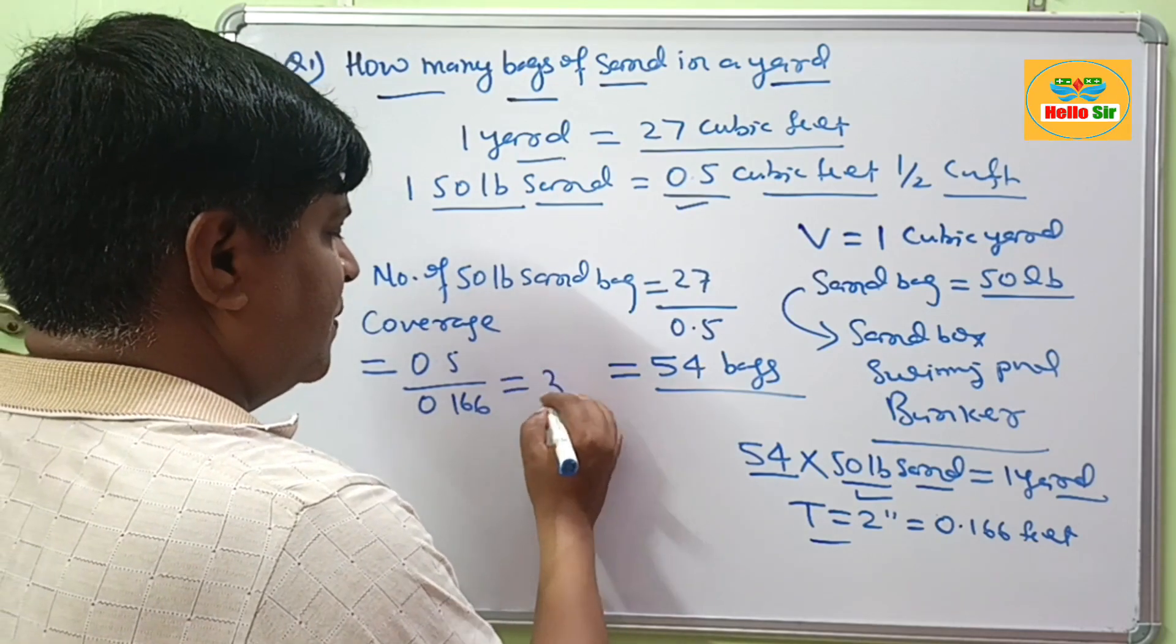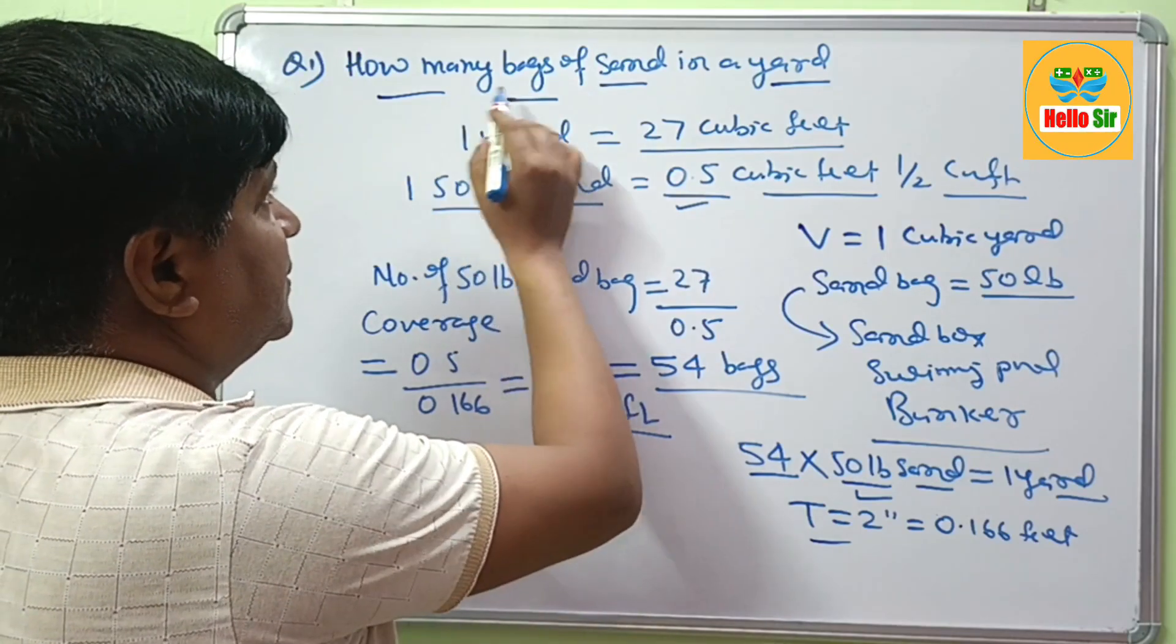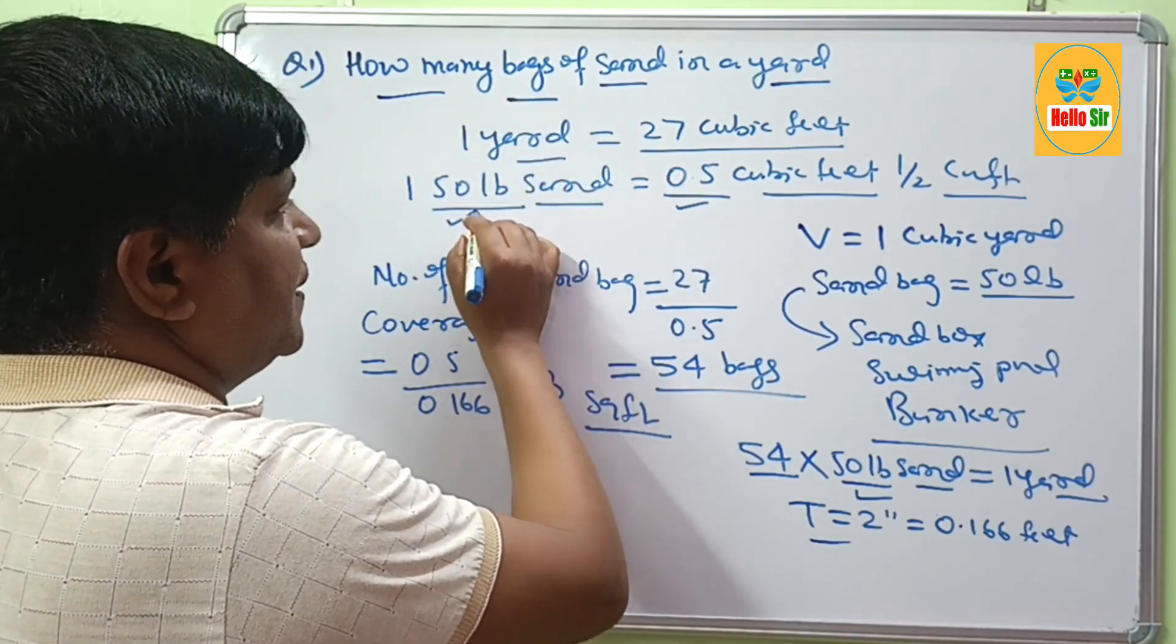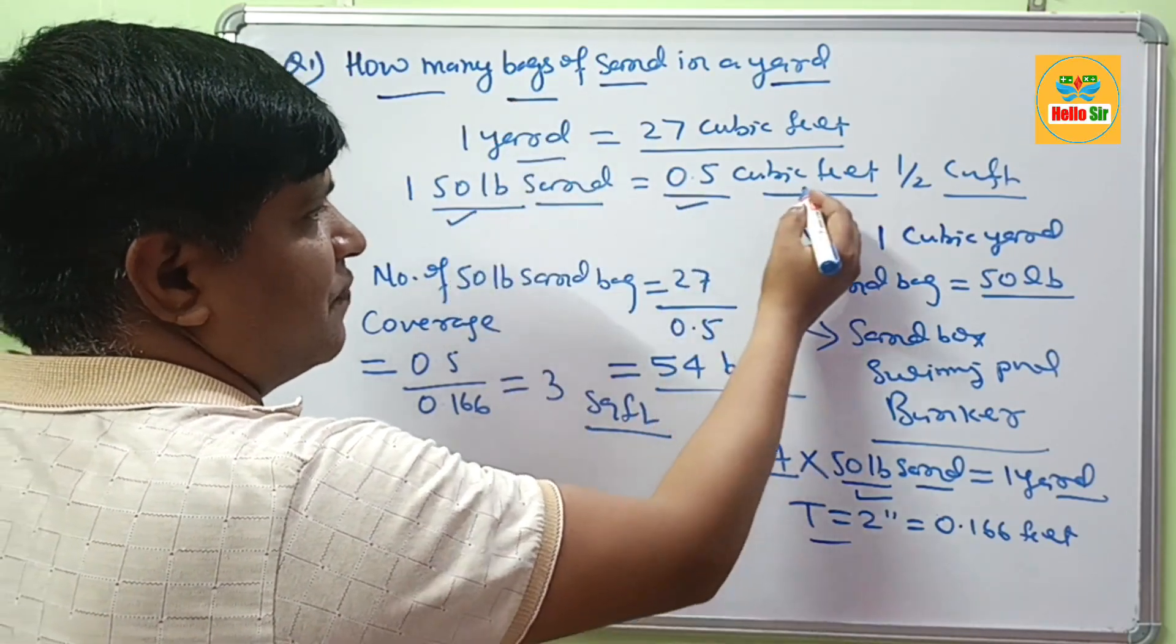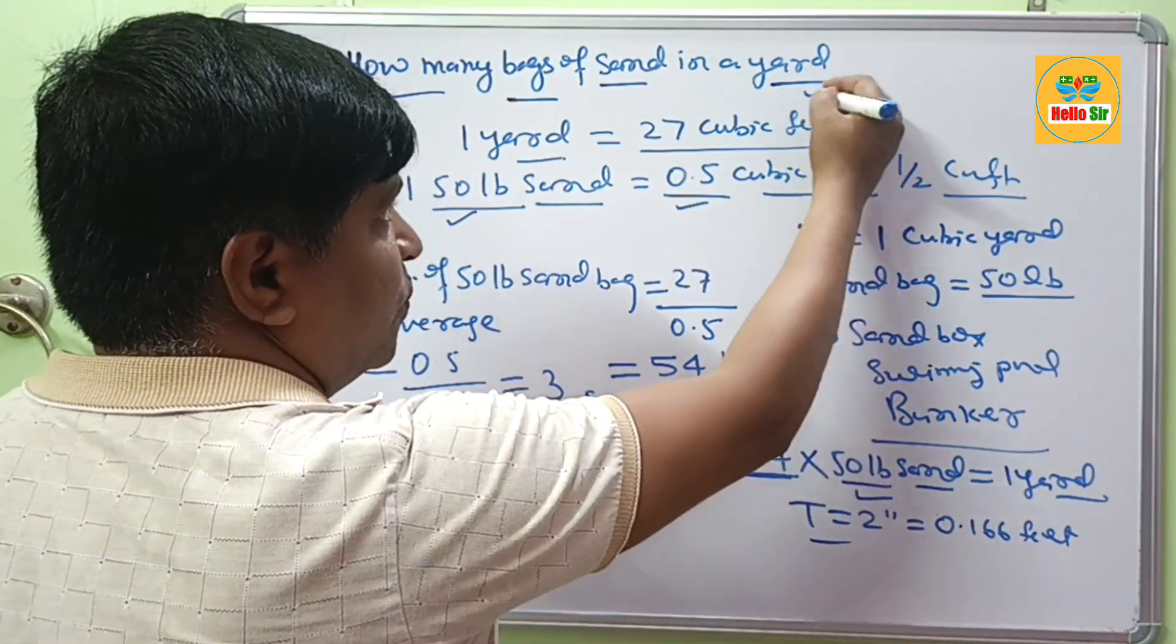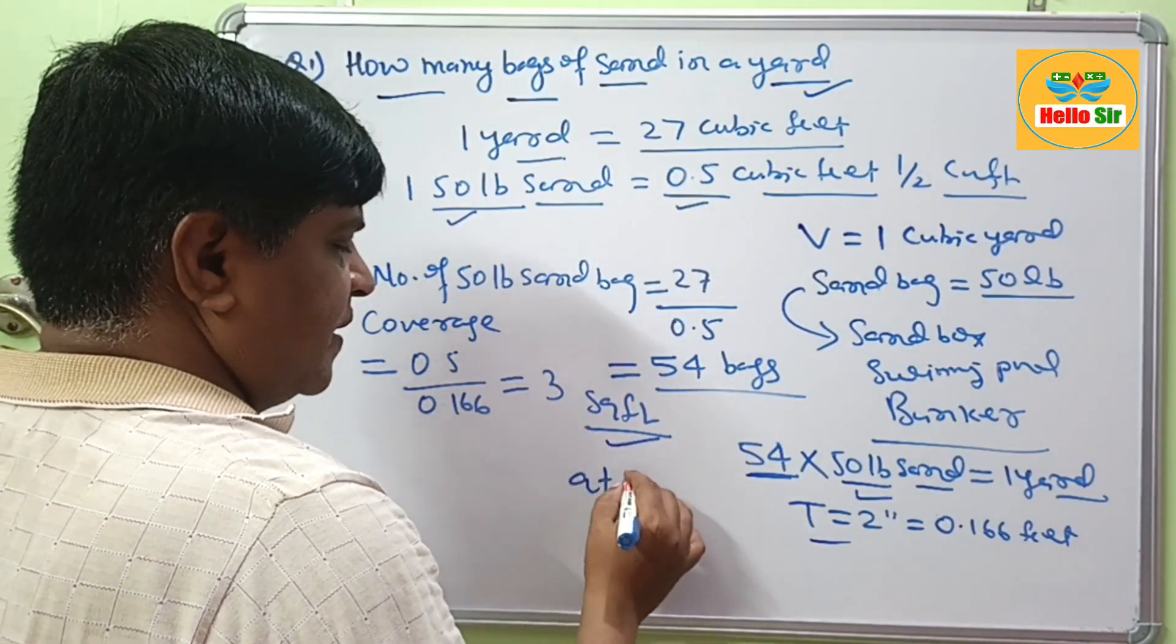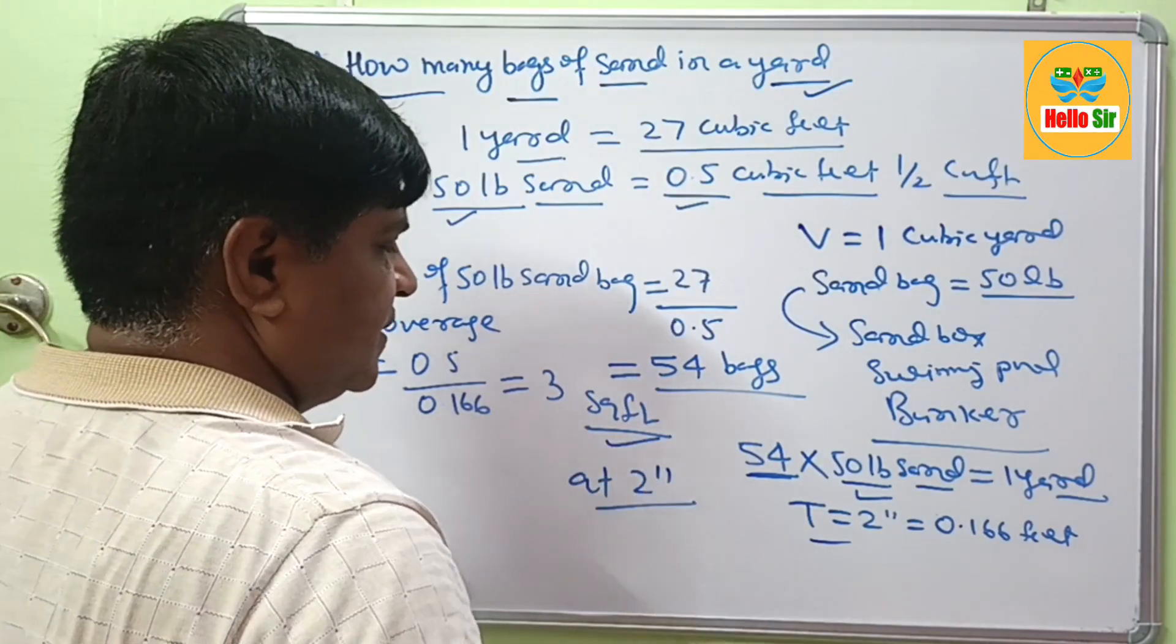This will come to about 3 square feet. So 1 sand bag weighing 50 lb yields 0.5 cubic feet, you need 54 bags to equal 1 yard, and it will cover about 3 square feet at a thickness of 2 inches.